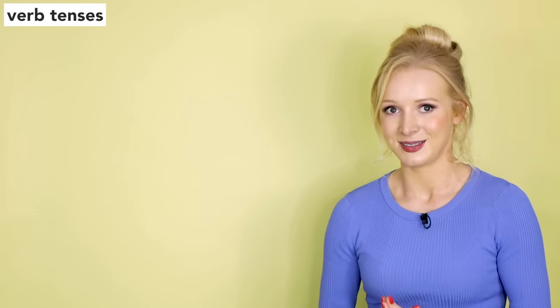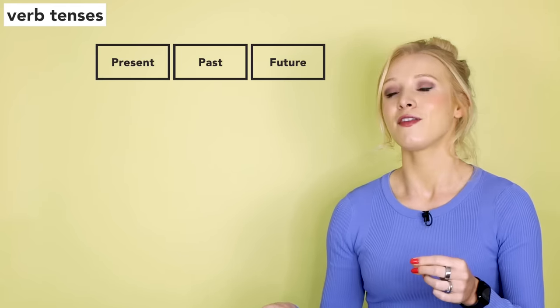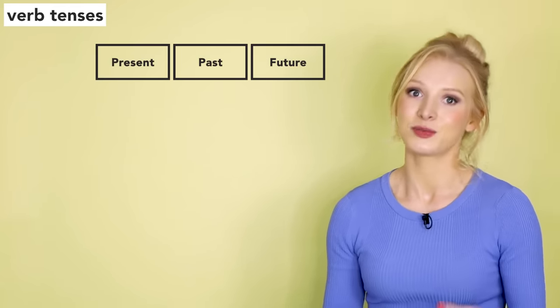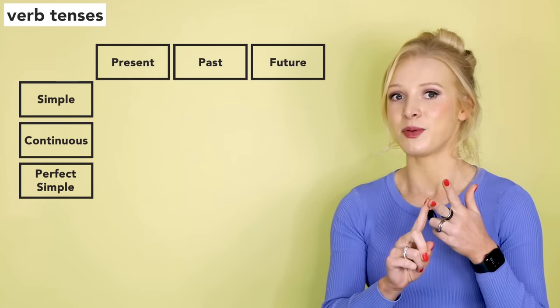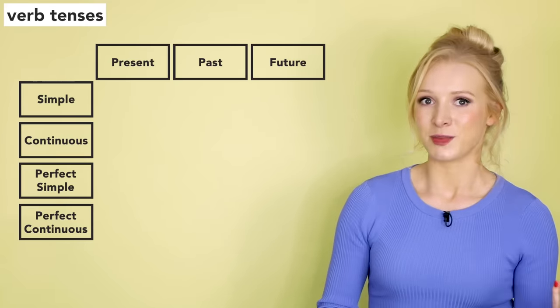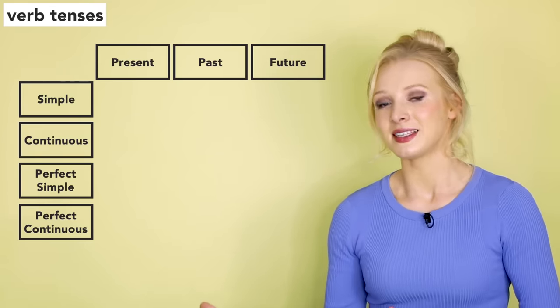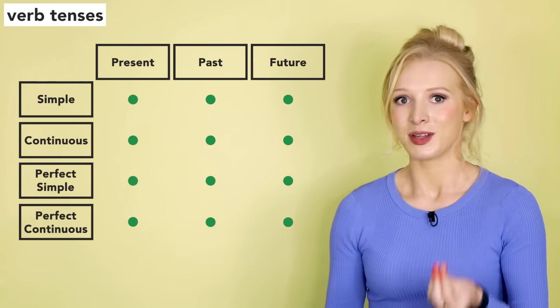It's a free service and you can unsubscribe at any time. Let's start this amazingly efficient grammar lesson by reviewing the English verb tenses. So technically there are only three tenses — the present, the past and the future — but we have four different aspects within these tenses: the simple, the continuous, the perfect simple and the perfect continuous. When we combine these four aspects with the three verb tenses, we get what we typically refer to as the 12 verb tenses.